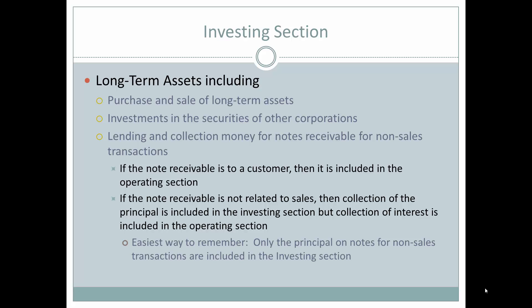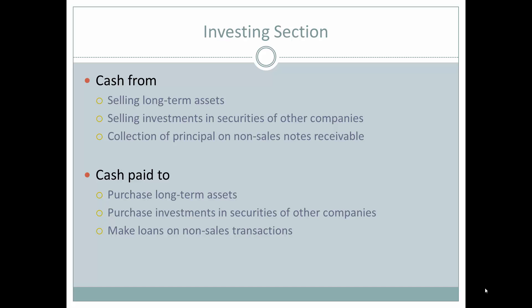However, the collection of interest on non-sales notes receivable is included in the operating section — it's a GAAP rule that doesn't always seem to make sense, but it is the rule. The easiest way to remember: only the principal on notes for non-sales transactions goes in the investing section; everything else is in the operating section. Cash inflows in investing include proceeds from selling long-term assets, selling investments in another company's securities, and collecting principal on non-sales notes receivable. Cash outflows include purchasing long-term assets, buying securities of another company, and making loans for non-sales transactions.